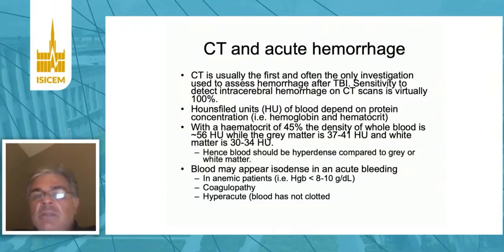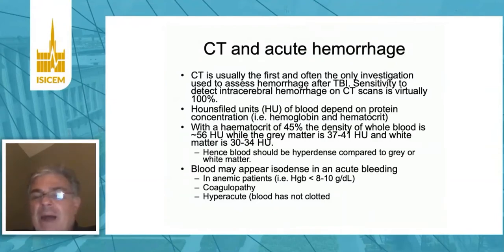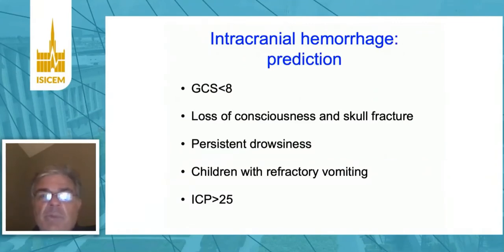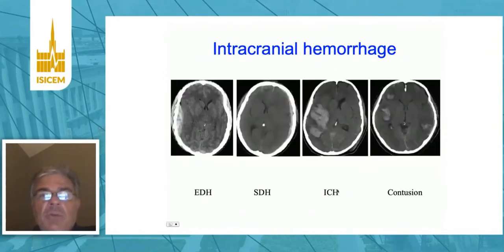The sensitivity is excellent. Acute hemorrhage is hyperdense — it looks white compared to the brain, which is more gray on imaging. One must recognize that in some instances acute blood might be isodense and perhaps missed, which can occur in anemic patients, those with coagulopathy, or in the hyperacute stage because the blood has not yet clotted. We can predict intracranial hypertension in those with more severe injury: low Glasgow Coma Scale, loss of consciousness with skull fracture, persistent drowsiness in children with refractory vomiting, and high intracranial pressure.